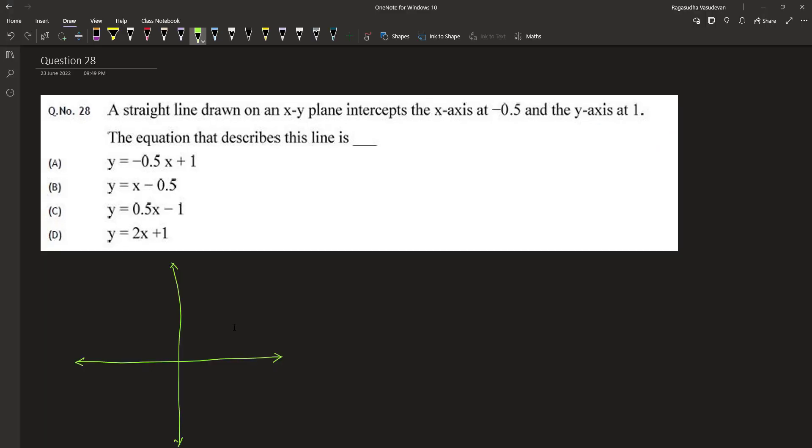The x-axis intercept is given as minus 0.5. So the first point is somewhere here minus 0.5 comma 0. The y-intercept is 1. So the second point is this which is 0 comma 1. The given straight line joins these two points.